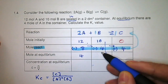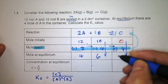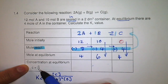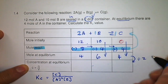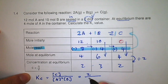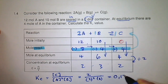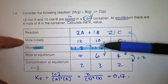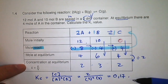Now convert moles to concentrations by dividing by the volume of 2 L. A = 4/2 = 2 mol/L, B = 6/2 = 3 mol/L, C = 4/2 = 2 mol/L. Substituting into the Kc expression: Kc = [C] / ([A]² × [B]) = 2 / (2² × 3) = 2/12 = 0.17. This block is one nice way to keep track of what you put in, what reacted, and what you have at equilibrium — because you need the concentrations at equilibrium for the Kc expression.